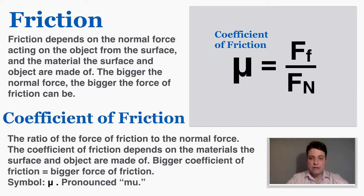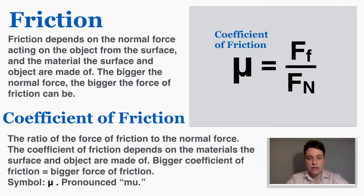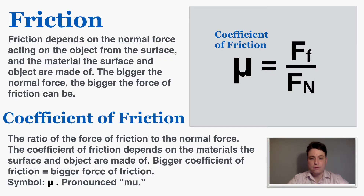This introduces a new idea called the coefficient of friction. The coefficient of friction is the ratio of the force of friction to the normal force, and it depends on the materials the surface and object are made of. A bigger coefficient means a bigger force of friction. The symbol is mu, a Greek letter that looks like a U with a long tail on the left. It has no units because it's a coefficient — force divided by force, so Newtons cancel out.